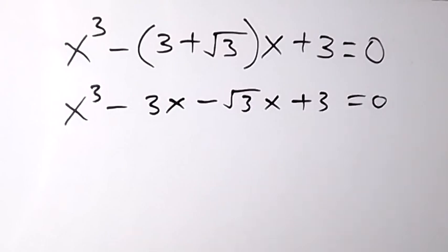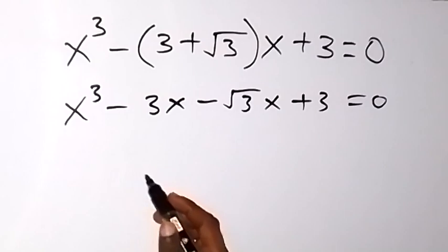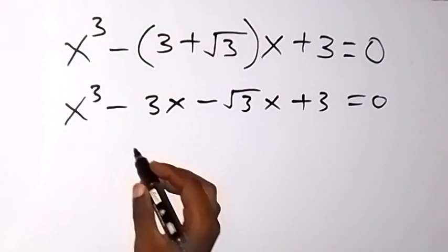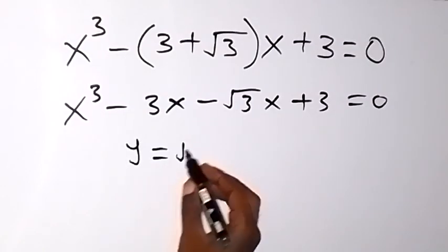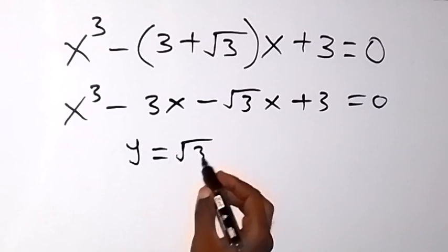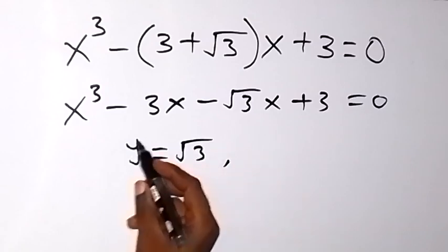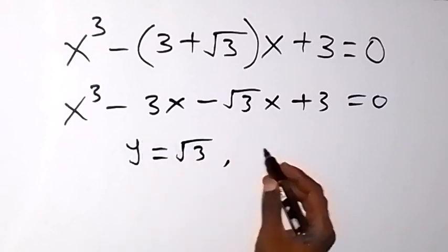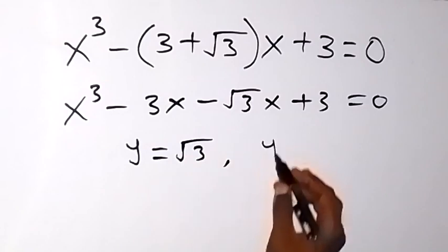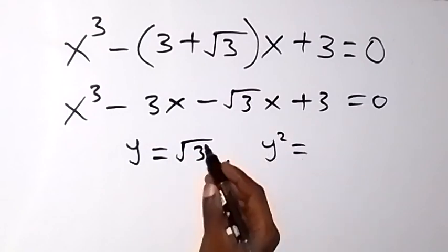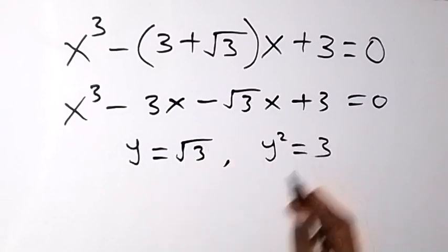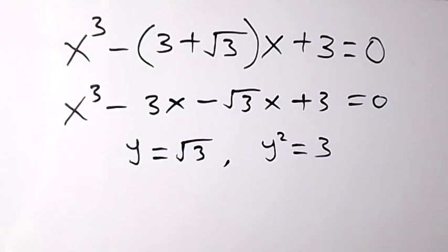From here, let's represent root 3 with a letter. So if y equals to root 3, we can also say that squaring both sides, we are going to have y squared. Then if it equals to square this side, we have 3. So y squared equals to 3, y equals to root 3.